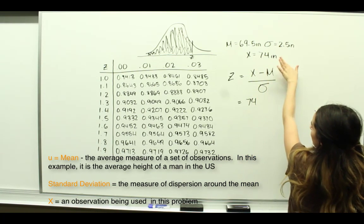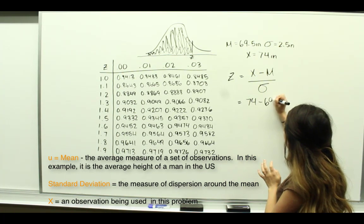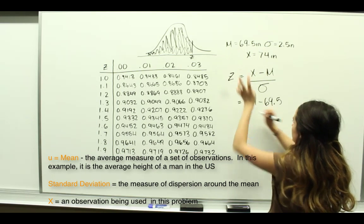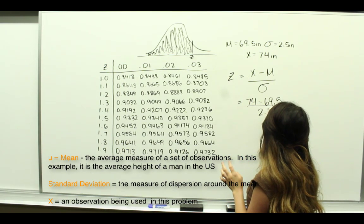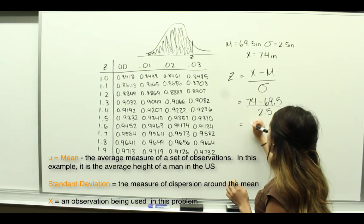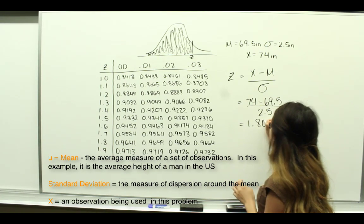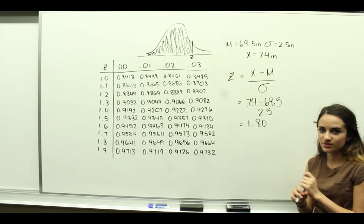So 74, which is this X, minus 69.5, which is the mean, over 2.5, which is the standard deviation, gives us 1.80 as our Z-score.